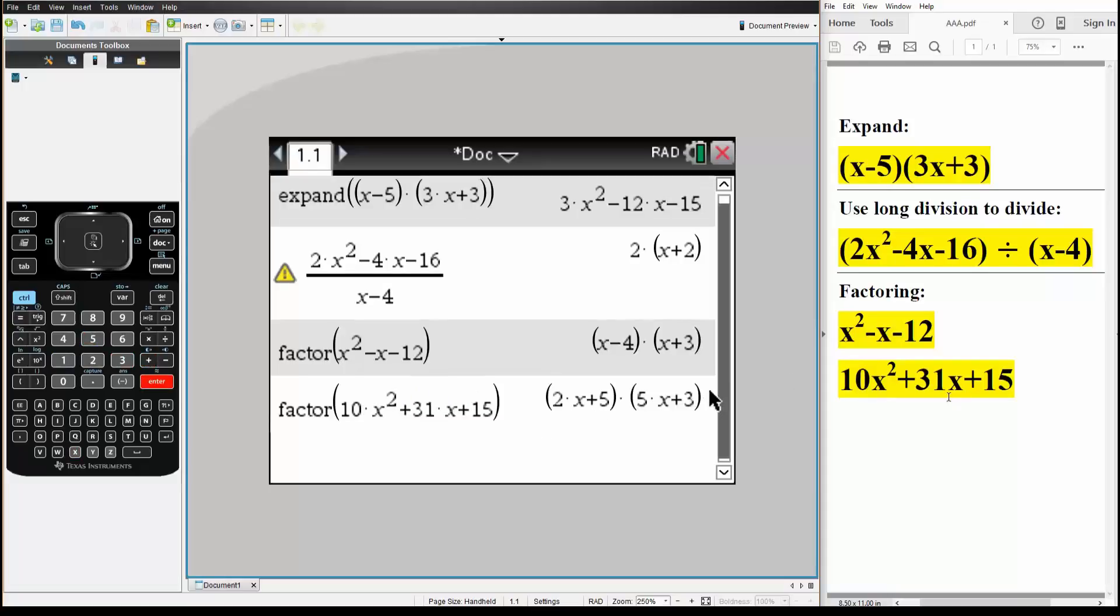And the answer to this problem: that was 2x plus 5, times 5x plus 3. And that's all we need to do for these problems.